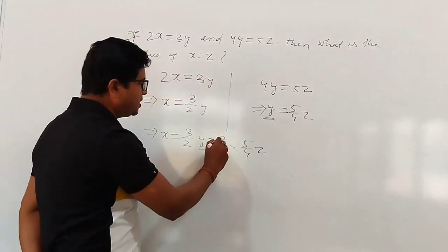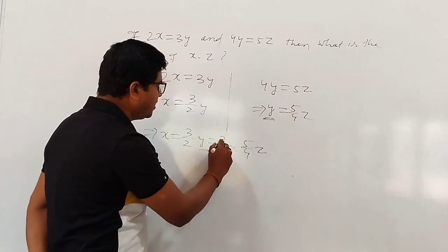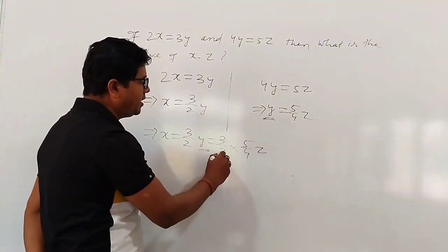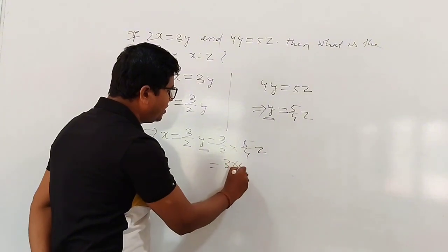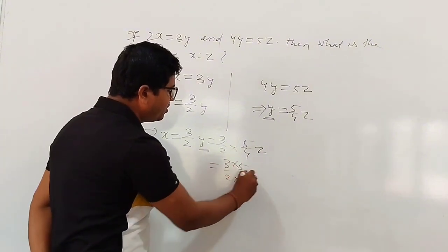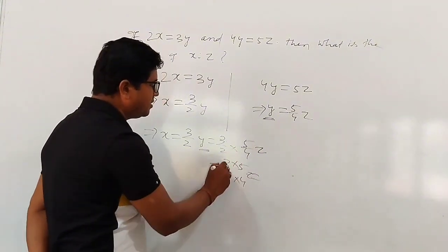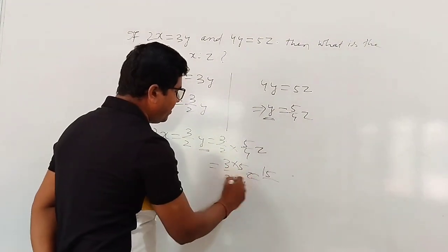Now see, 3 into 5, multiply numerator and numerator, and denominator and denominator. So 3 into 5 divided by 2 into 4z. 3 into 5 is 15, divided by 2 into 4 is 8z.